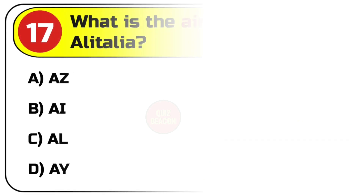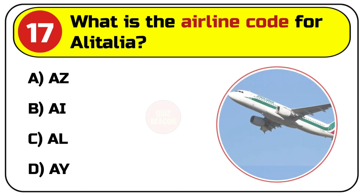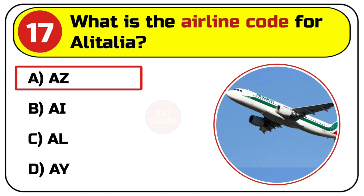Question number seventeen: what is the airline code for Alitalia? Options are A. AZ, B. AI, C. AL, D. AY. Correct answer is A. AZ.